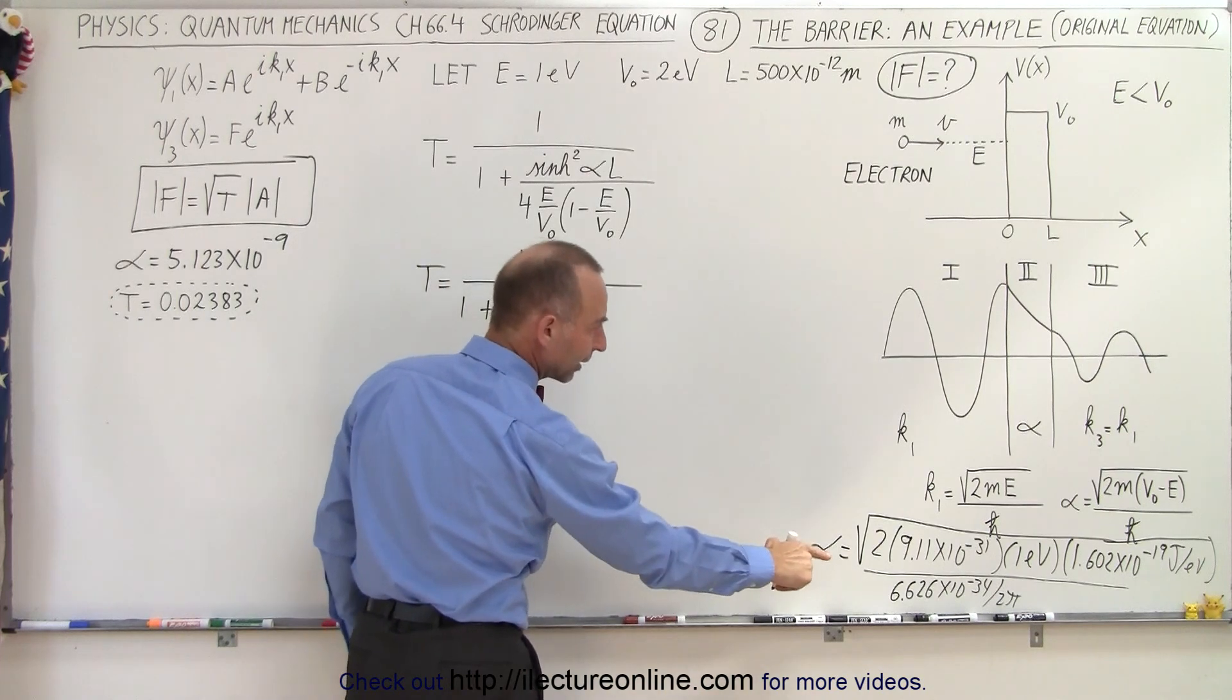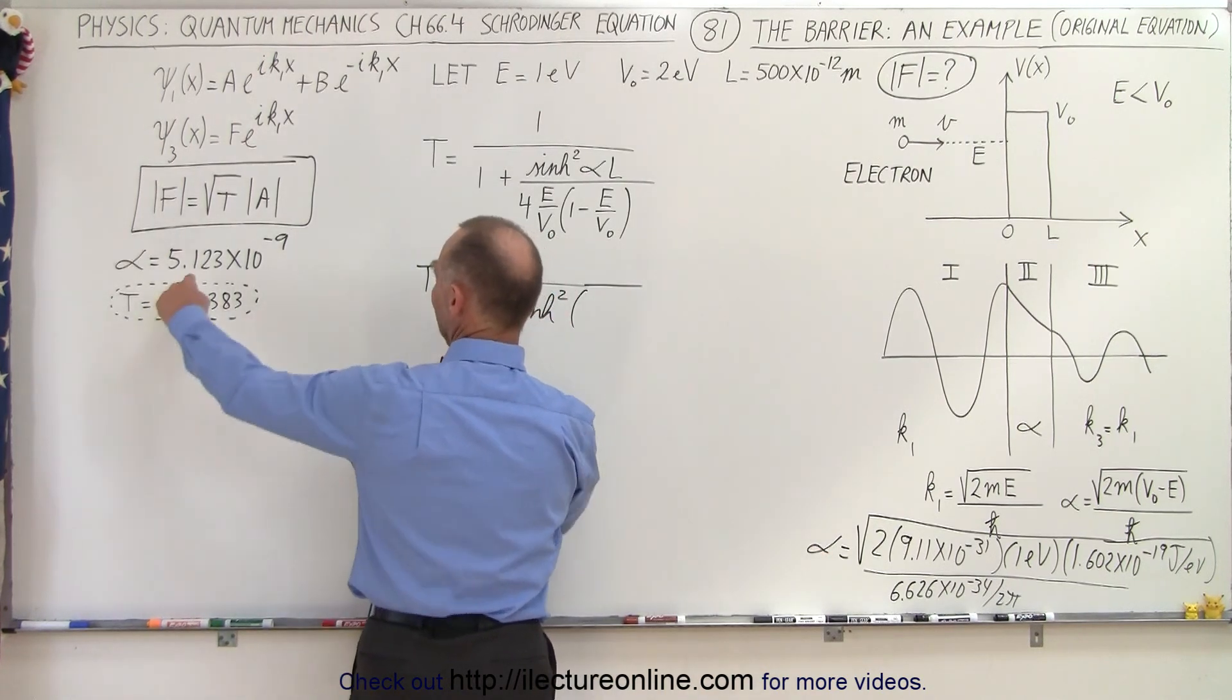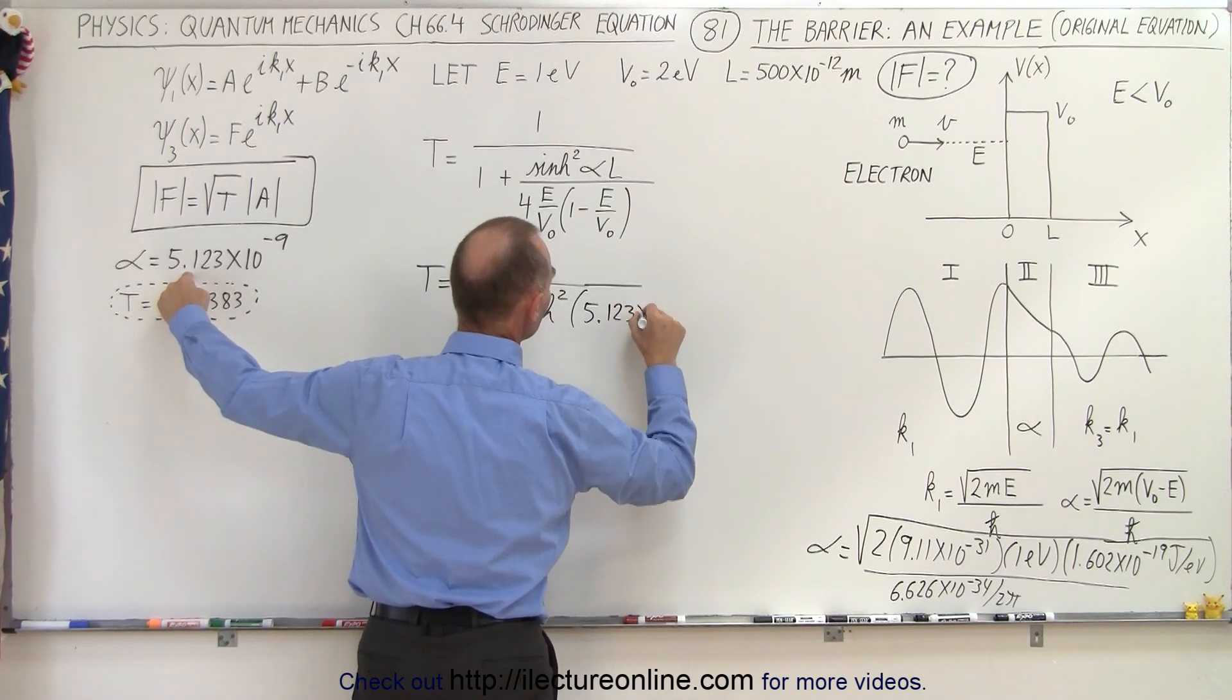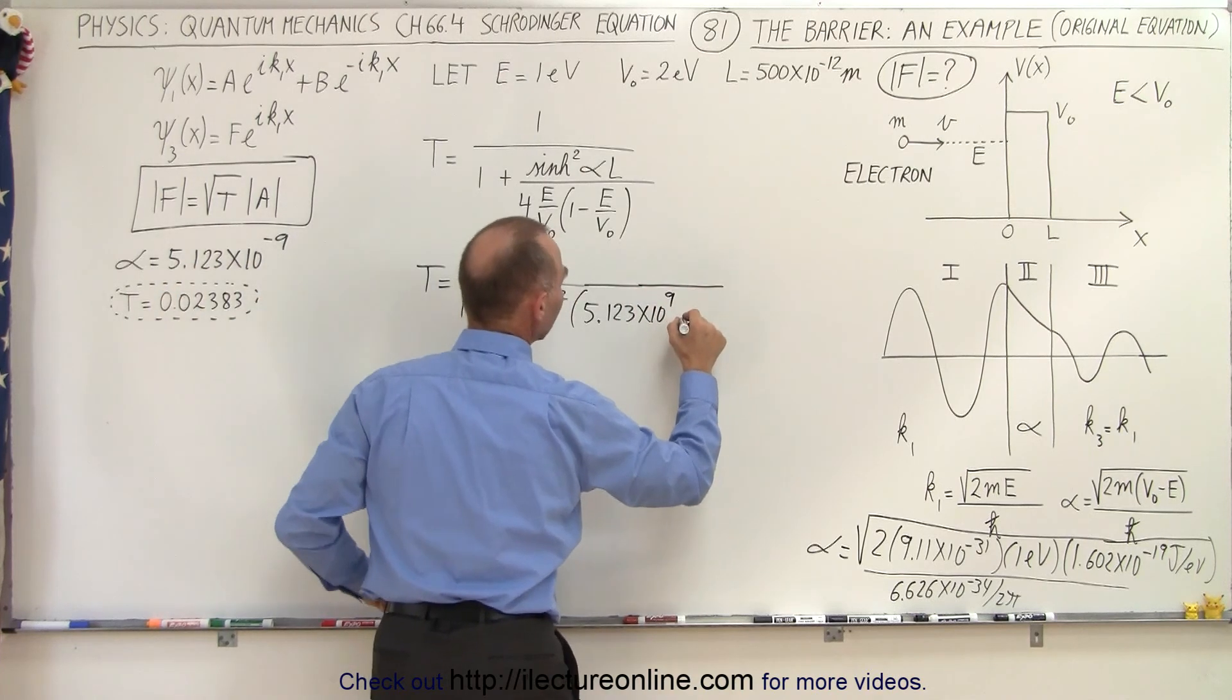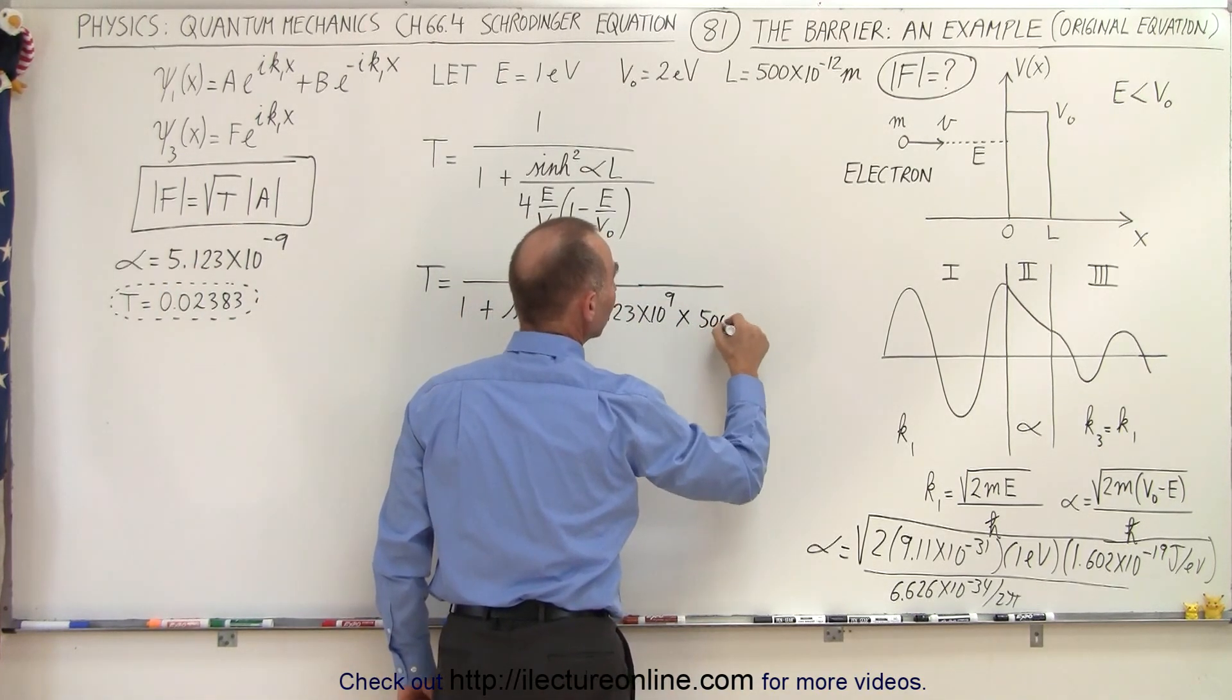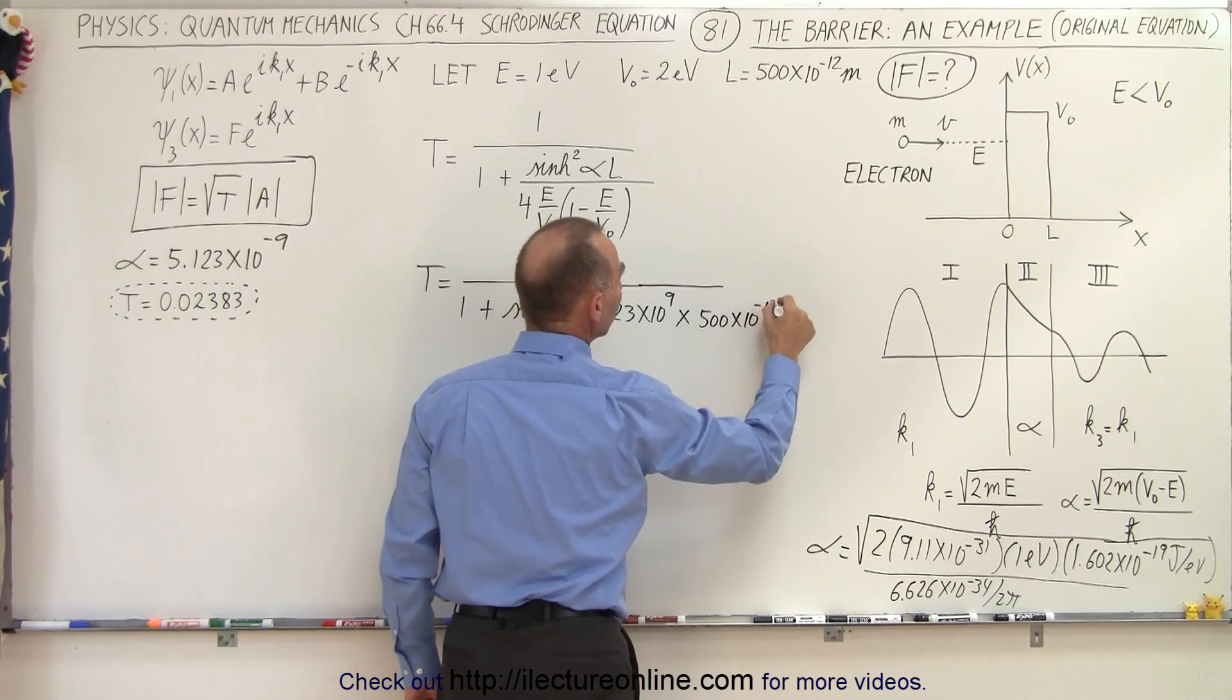Now alpha we had calculated before and we wrote the value down, it's 5.123 times 10 to the 9th, and we have to multiply that times the value for the width which is 500 times 10 to the minus 12.